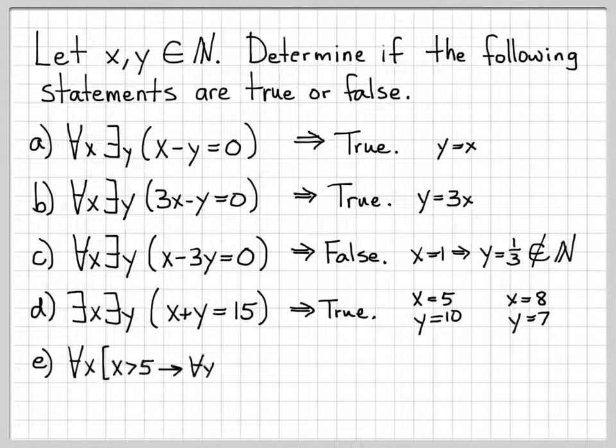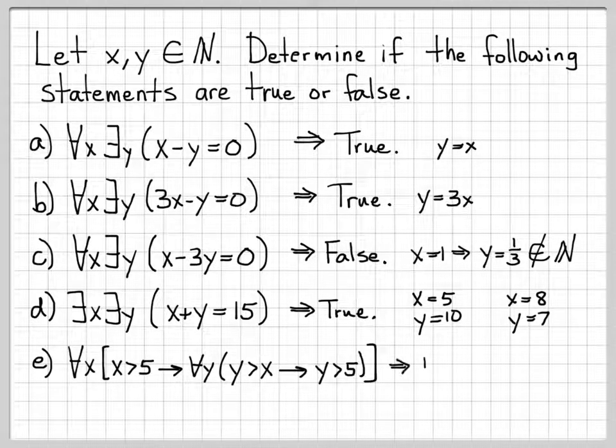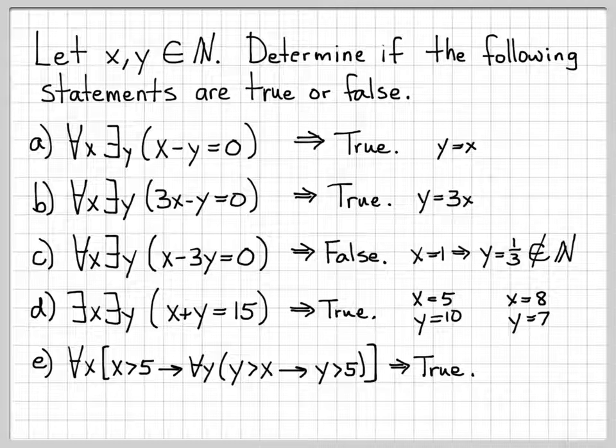What about part e? For all x, x greater than 5 implies that for all y, such that y is greater than x, that y is greater than 5. So this is a much more complicated expression. You've got to kind of break it down into its parts. The statement is that for any x of the natural numbers that I pick that's greater than 5. So this would include the number 6, 7, 8, 9, 10, 11, etc.